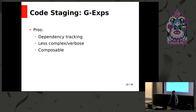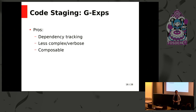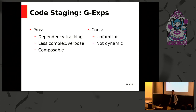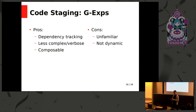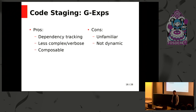In summary, some pros of using G-expressions are that they manage your dependencies for you in your build expression — I no longer have to maintain a list of inputs. That leads to less complex code and makes G-expressions much more composable. One downside is that because the inputs are no longer separate, it's more difficult to dynamically modify those inputs. Once I've said I ungexp core-utils, I get the output path for that exact version. In practice, that can be a pro or a con depending on the situation.